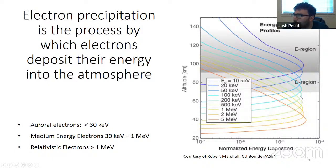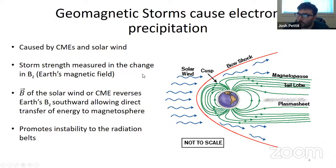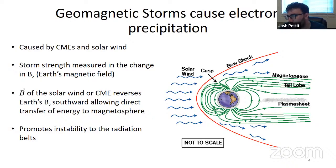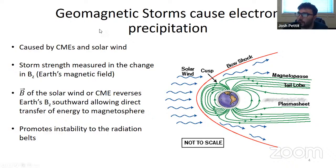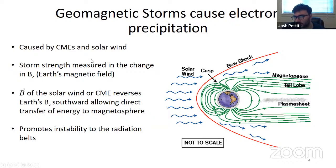A particular electron would enter the atmosphere and where it deposited its energy — and of course, how does this occur? Well, the main cause are geomagnetic storms. And I probably don't have to tell this community that, but geomagnetic storms tend to cause most of the electron precipitation.